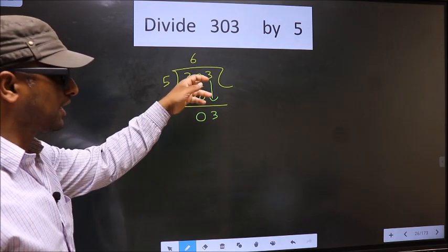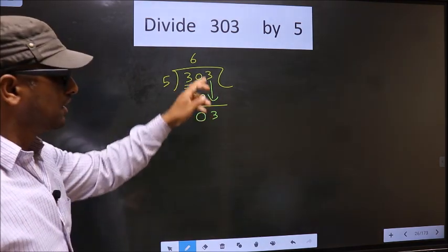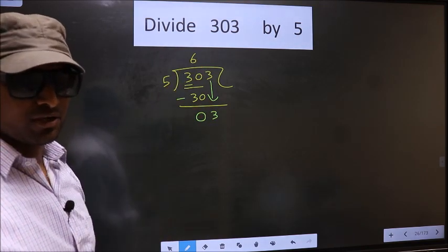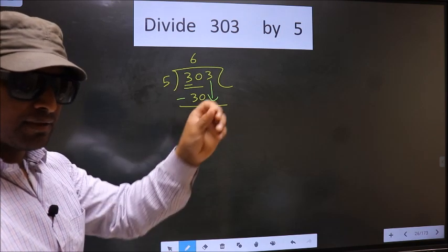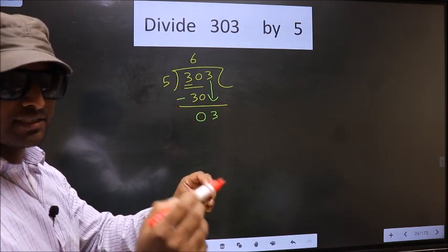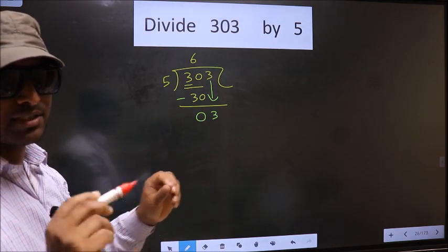Just now you brought the number down, and in the same step you want to put a dot and take 0, which is wrong. I repeat: bringing the number down and putting a dot and taking 0, both at the same step, you are not supposed to do.